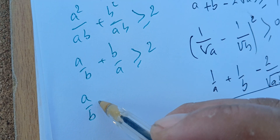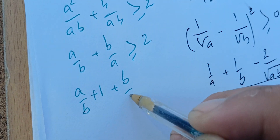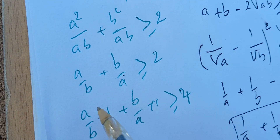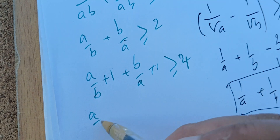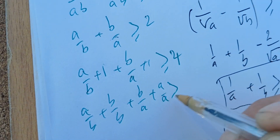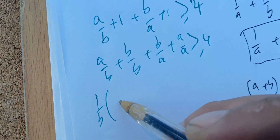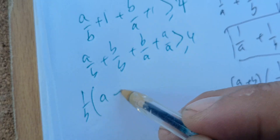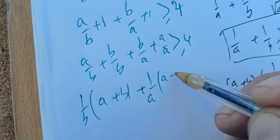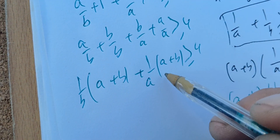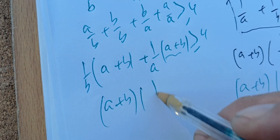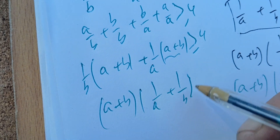Now we add two to both sides: a/b + b/a + 2 ≥ 4. We can write the +2 as b/b + a/a, giving a/b + b/b + b/a + a/a ≥ 4. Factoring one over b from the first two terms gives (1/b)(a + b), and factoring one over a from the last two terms gives (1/a)(b + a). So we have (a + b)(1/b + 1/a) ≥ 4, which is the required result.